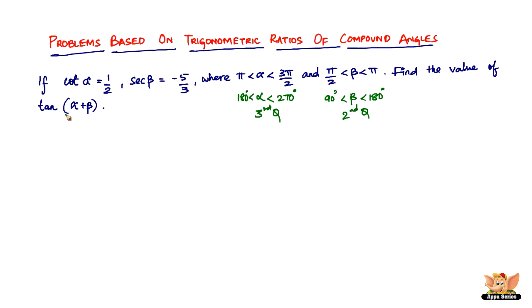So we need to find the value of tan(α+β). We don't have to worry about the value of tan α because we've got the value of cot α. Tan α is nothing but the reciprocal of cot α, right? So tan α is just going to be 2.